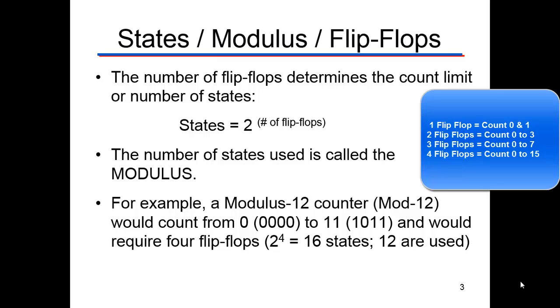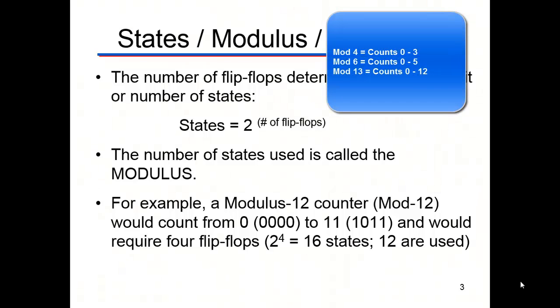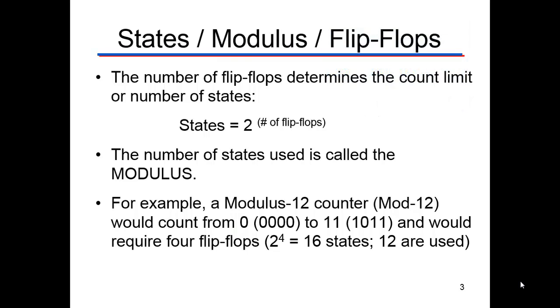In the example listed on the slide, a modulus 12 counter would count from zero to eleven, but it needs twelve states. Two to the three, three flip-flops would be eight. That's not enough, so we have to use two to the four, four flip-flops, sixteen. We have to have more than enough.